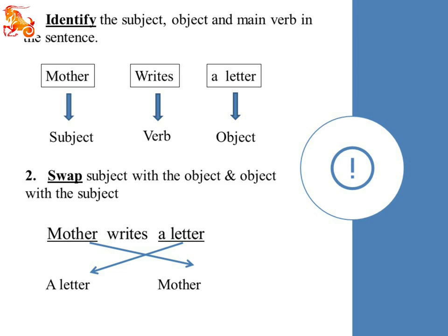Quickly move to the second step. Swap subject with the object and object with subject — interchange the places of subject and object of the given sentence. The letter, the object of the active sentence, takes the place of the subject and comes to the beginning of the passive sentence. And the subject, mother, goes back — it is given less importance. We want to give priority to the letter. That's why subject and object change their places.